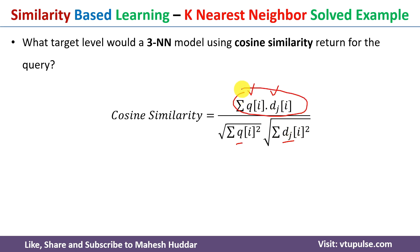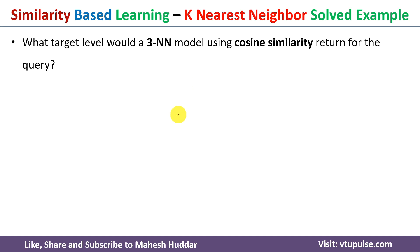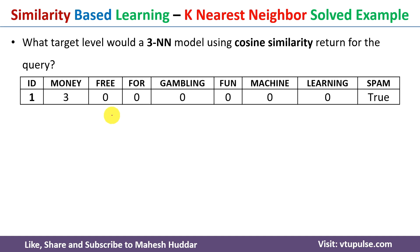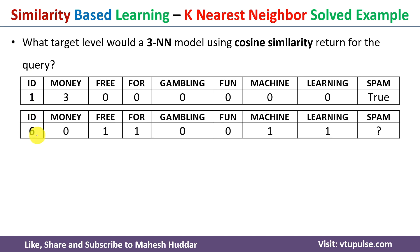First we calculate the numerator, which is the dot product, then we calculate the two denominator terms, and put all the values together to get the cosine similarity. The query example is id 6, and examples 1 through 5 are the given examples — that is d in this case.